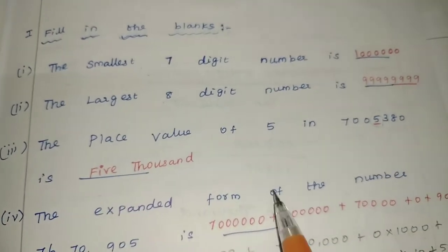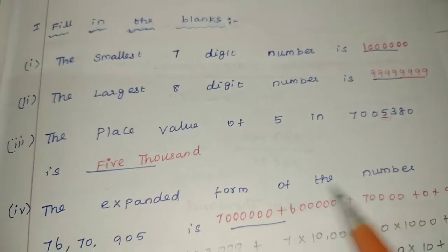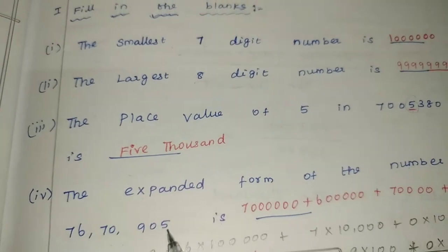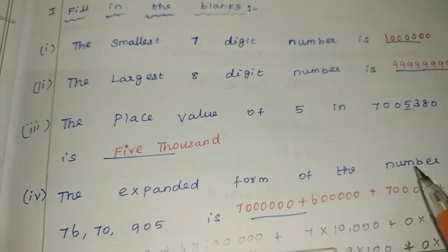Next: the expanded form of the number 767095 is dash. We need to expand this number.